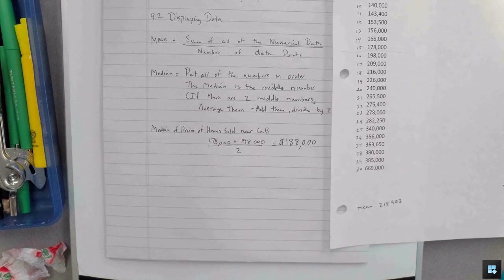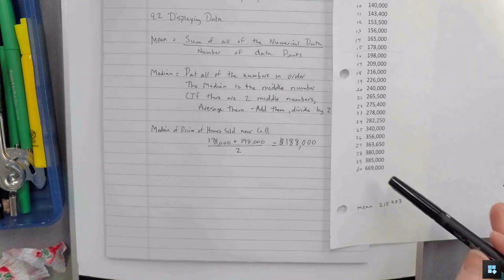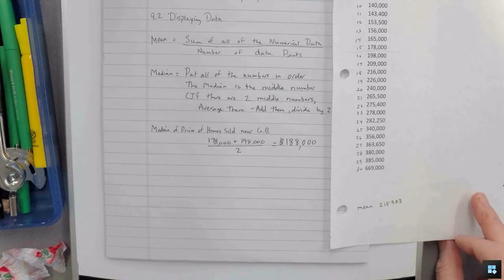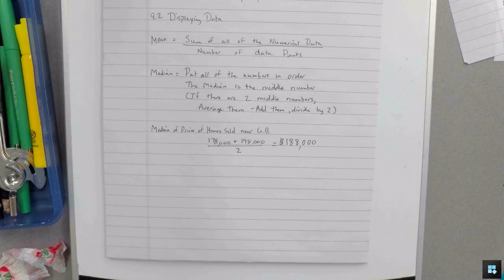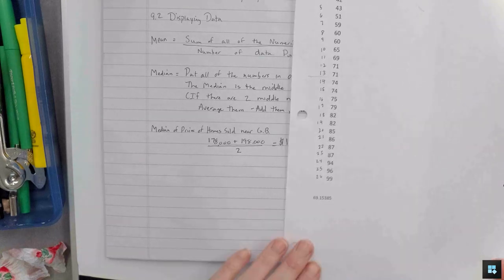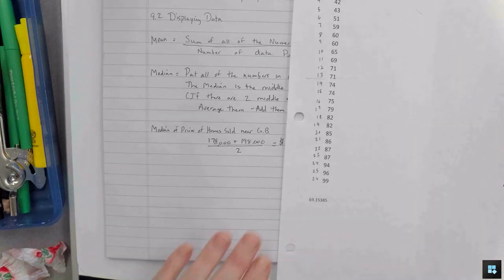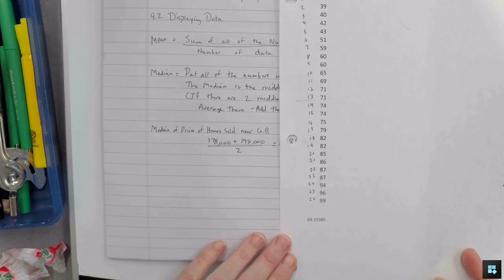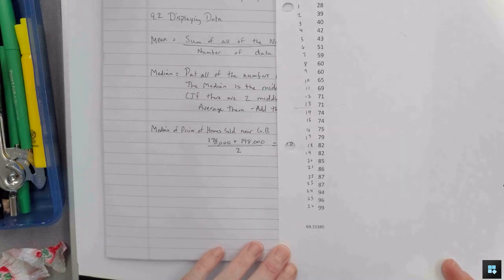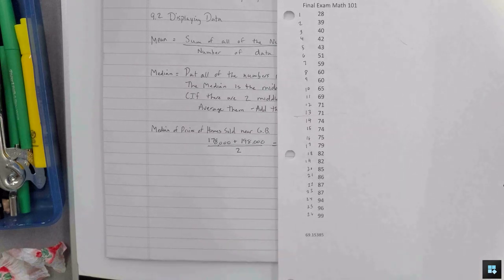And you can see why that is when you see that there's this $669,000 that was averaged in all of these and brought the mean up higher than the median is. So half the homes sold in Green Bay were under $188,000 and half the homes sold in Green Bay were above $188,000. In this list of, in the time period that I picked these off of Zillow. How about you try one of these, okay? Can you find the median for these final exam grades? And once you find the median, think about why it might be different than the mean, which is the $69,000 at the bottom of the page there.